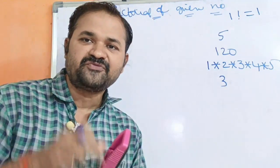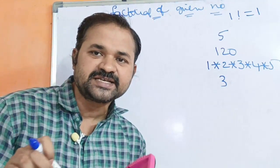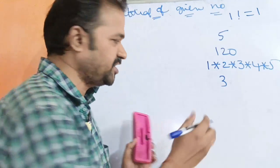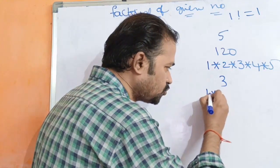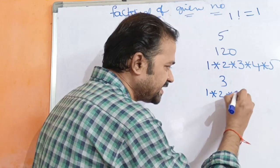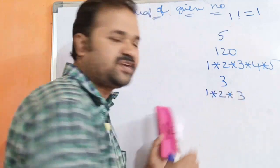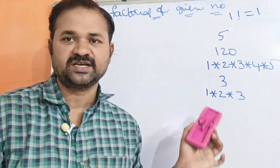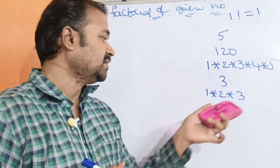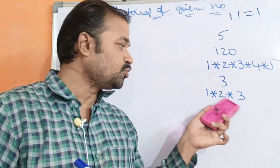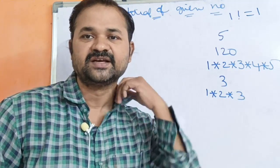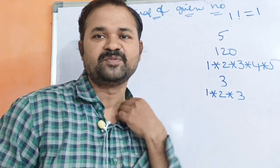Ippo manu 1 nunchi start chesi a number varaku multiply cheyali. So 1 into 2, number anta 3 so 3 varaku multiply cheyali. 1 into 2 into 3 anta - 1 into 2 is 2, 2 into 3 is 6. So 6 print cheyali.